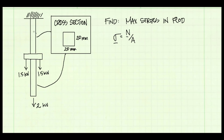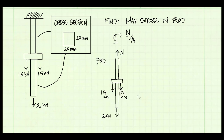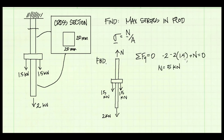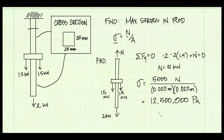If we inspect the problem, we see that cutting somewhere in the upper rod gives us the maximum force. A free body diagram with a cut in the upper rod and summing forces in the y-direction gives a normal force of 5 kN. Taking that normal force of 5,000 N and dividing by the cross-sectional area — a square with 20 mm sides, converted to meters — we get a normal stress of 12.5 MPa, which is the maximum stress in the rod.